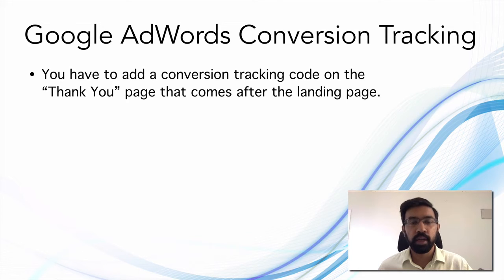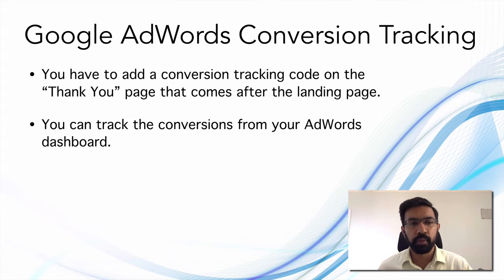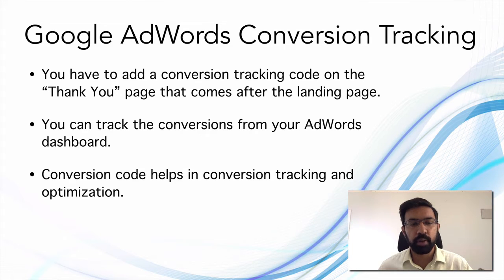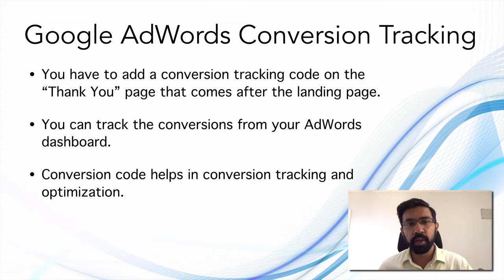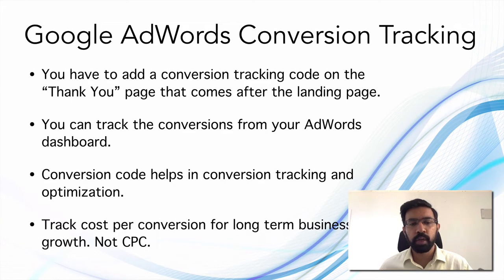We will look at this in depth with an example. You can track conversions from your AdWords dashboard. Conversion codes help with both conversion tracking and conversion optimization. In this course we have only looked at manual CPC bidding, but there are also automatic bidding strategies. These automatic bidding strategies are helpful if you are targeting ads for conversions rather than for clicks. You have to track cost per conversion for long-term business growth, not just cost per click — because cost per click does not matter; what really matters is the cost per conversion you are getting.